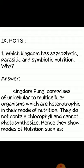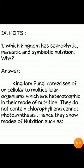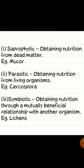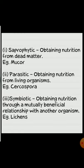Question: which kingdom has saprophytic, parasitic and symbiotic nutrition? Answer: kingdom Fungi comprises unicellular to multicellular organisms which are heterotrophic in their mode of nutrition. They do not contain chlorophyll and cannot photosynthesize. Hence they show modes of nutrition such as: saprophytic — obtaining nutrition from dead matter (example: Mucor); parasitic — obtaining nutrition from living organisms (example: Cercospora); symbiotic — obtaining nutrition through a mutually beneficial relationship with another organism (example: lichens).